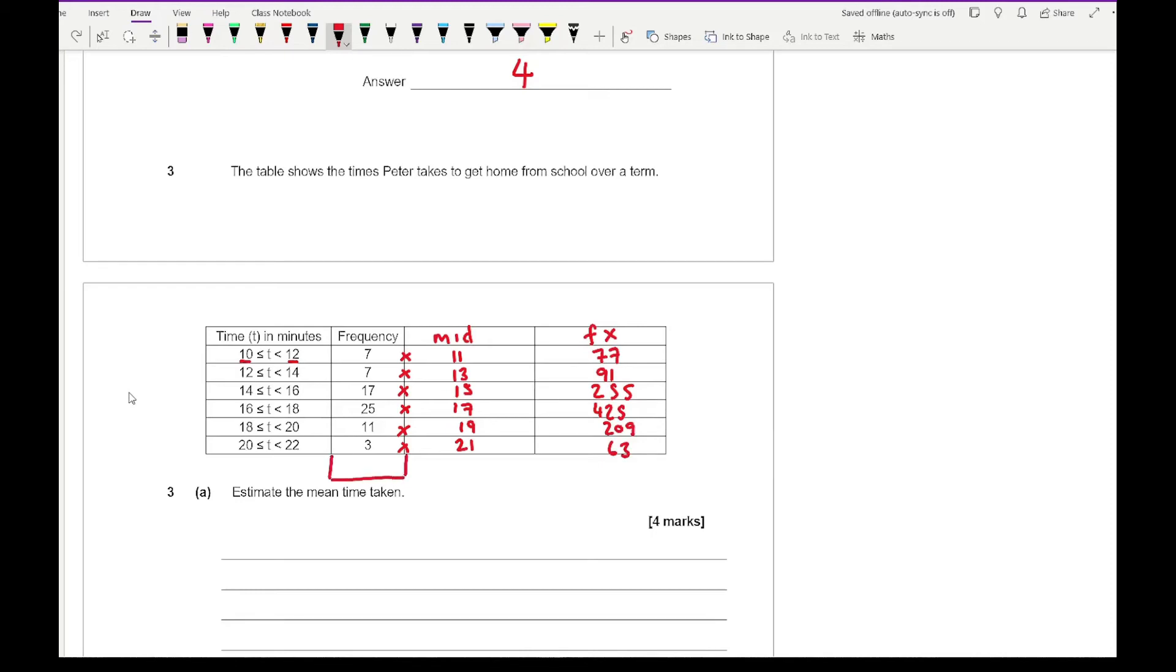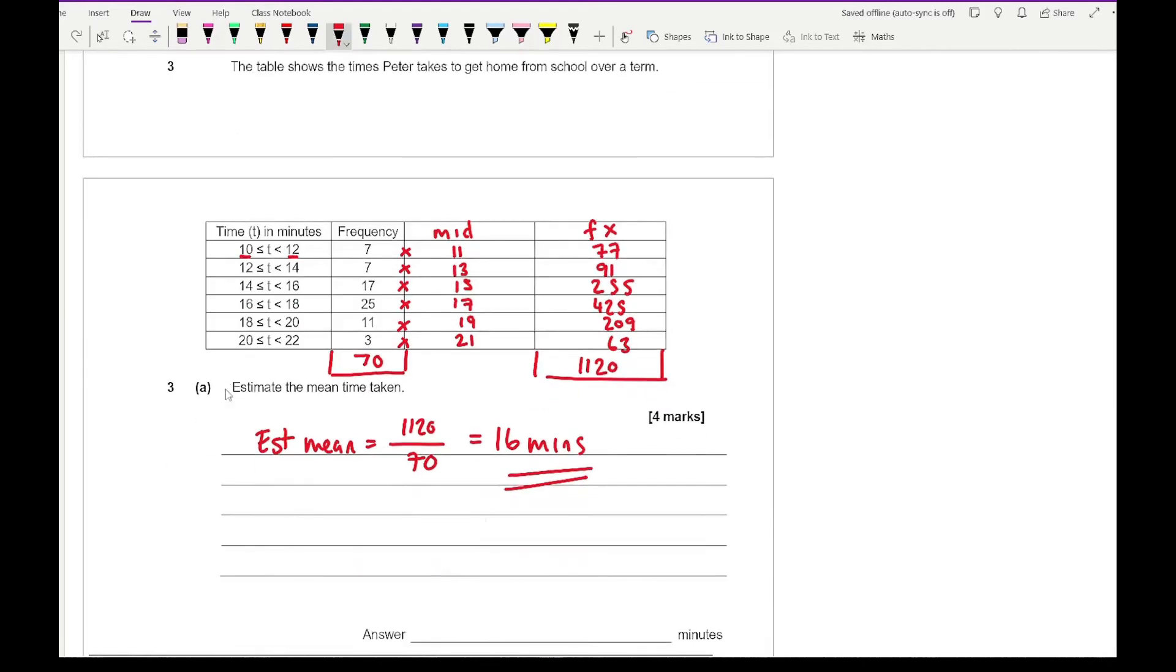From this, what we then need to do is work out our totals. The only totals we're interested in is the total frequency and the total fx. So the total frequency adds up to 70 and the total fx you should have a total of 1120. So here the estimated mean is the total fx which is 1120 divided by 70, and if I work that out I should have an answer of 16 minutes. It's really important that you do show your working because it's worth four marks.